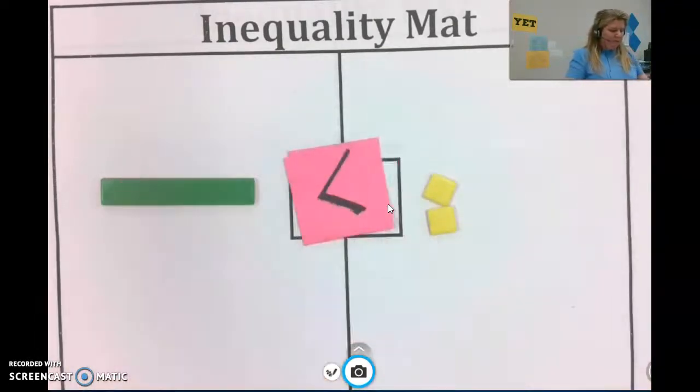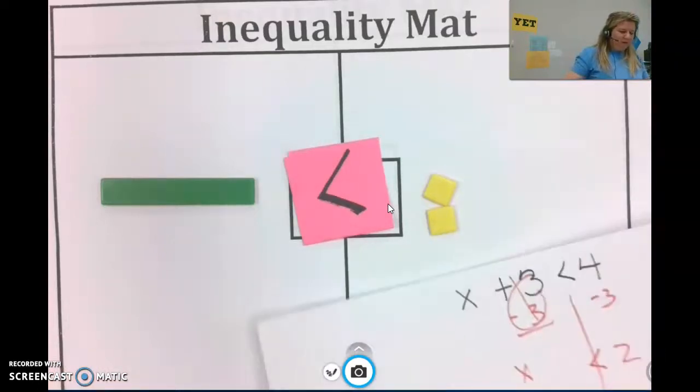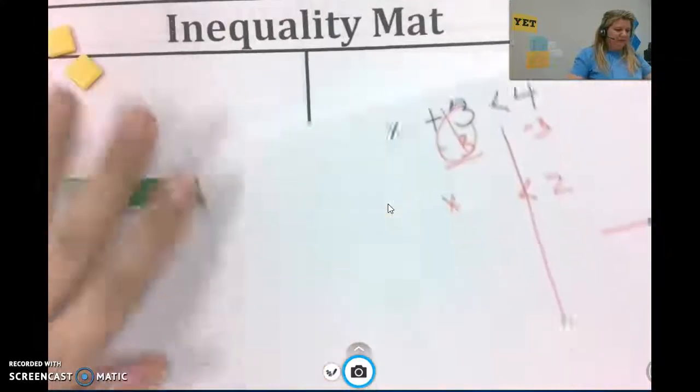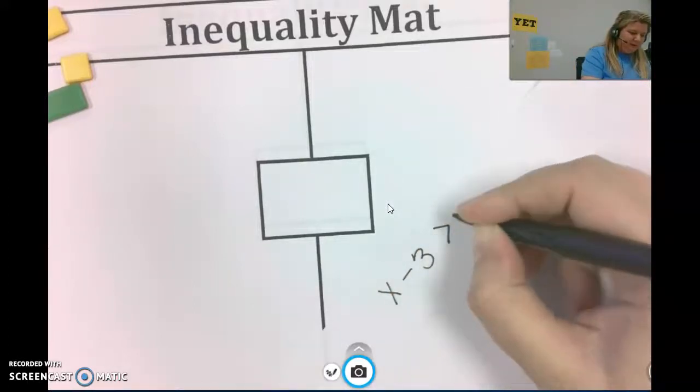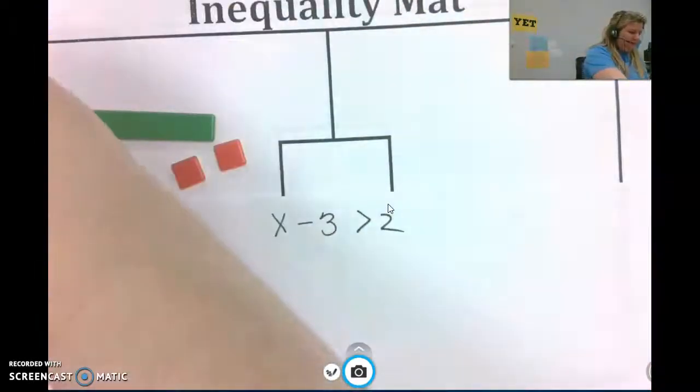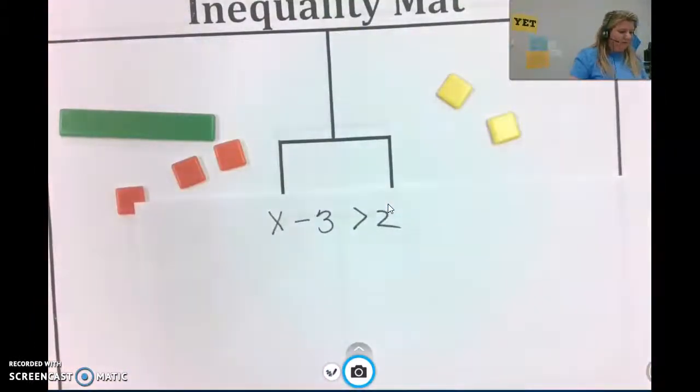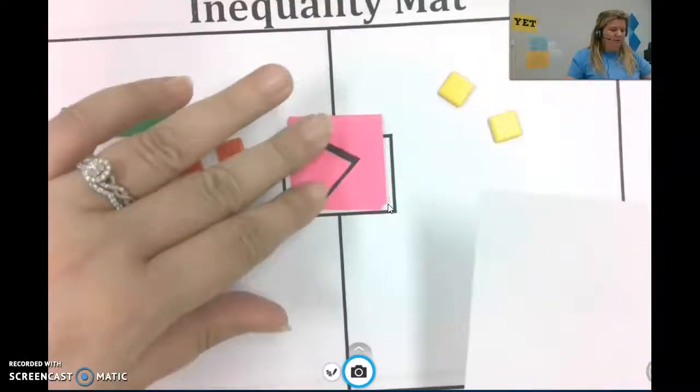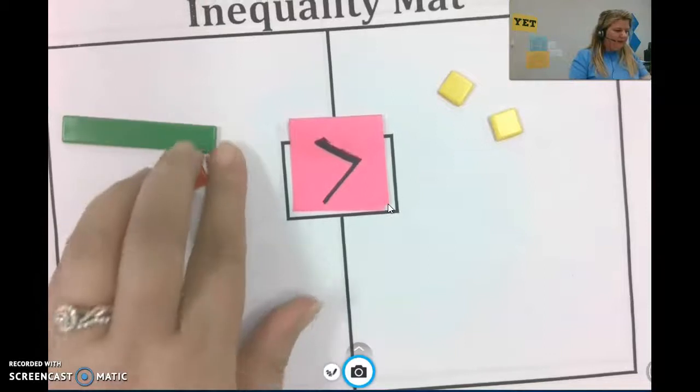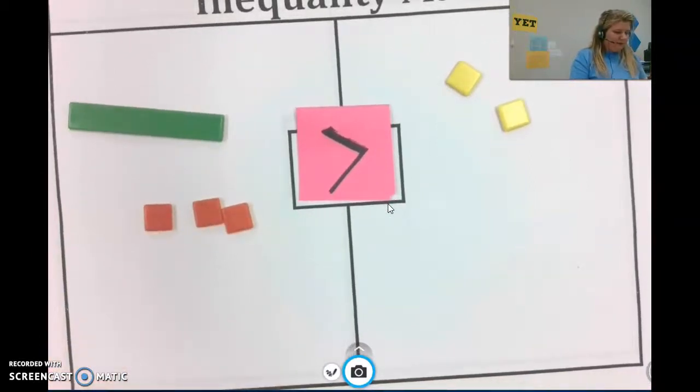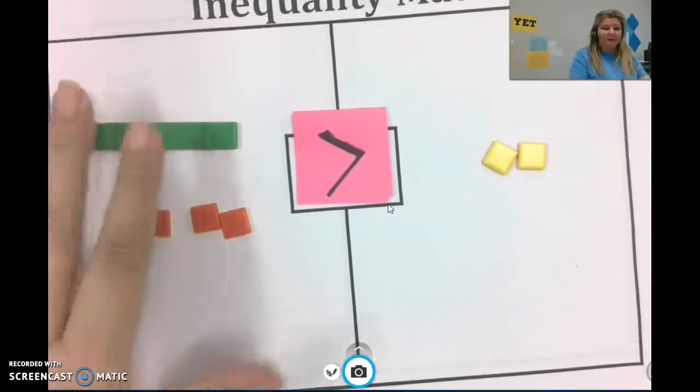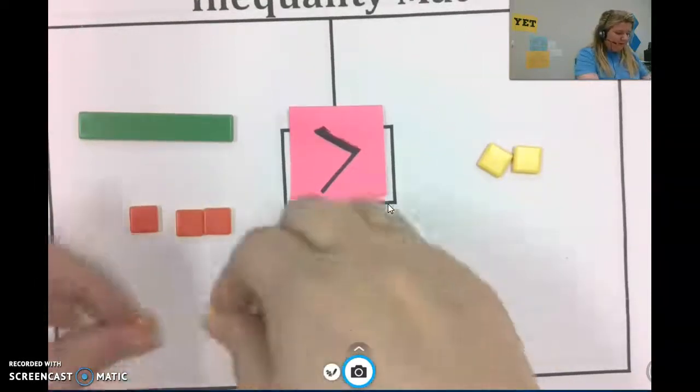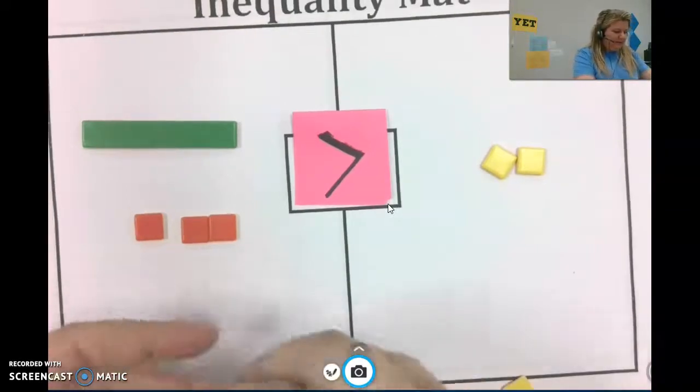So that's my first problem. The next problem is similar, but a little different. This time we're going to do x minus 3 greater than 2. So I'm going to set that up. x and then 3 negatives. And that is greater than 2. So I've got my greater than.